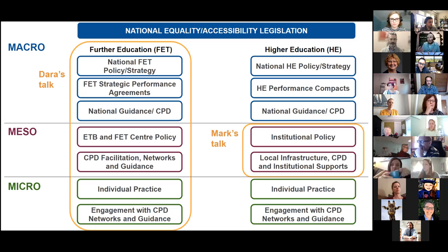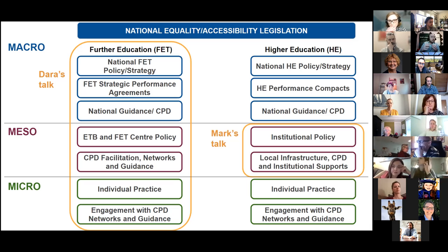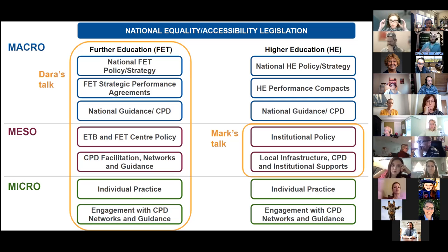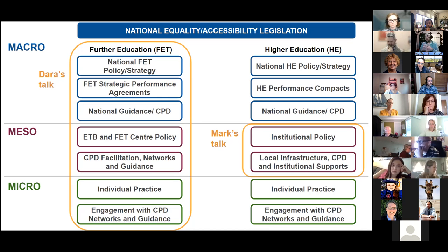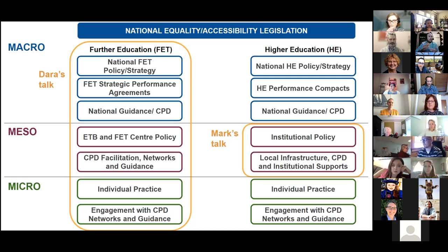At the macro level, there are state policies, performance agreements, funding targets and KPIs, and national CPD or guidance sanctioned at the state level. At the meso level, institutional policy can be general or UDL-specific, and importantly it involves mapping how UDL can support other existing policies, plus the digital and physical infrastructural supports practitioners need.